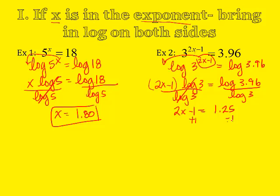Algebraically, I next need to add 1. So I have 2x equals 2.25. Divide by 2. And then x will be 1.13. So it's a lot of algebra. You just need to remember the basic properties of logarithms. Now remember, this is how you solve it if x is in the exponent.